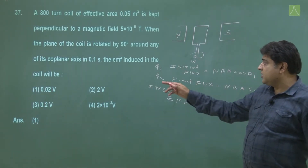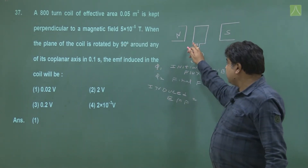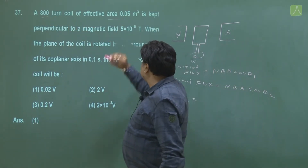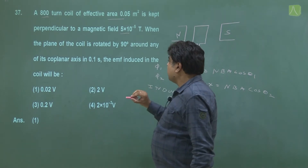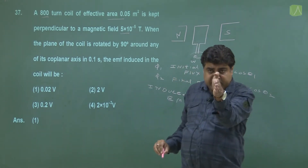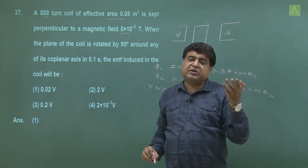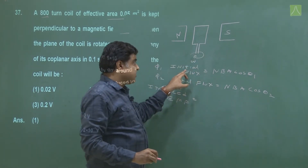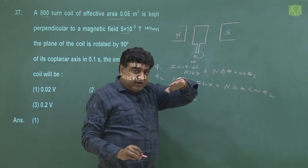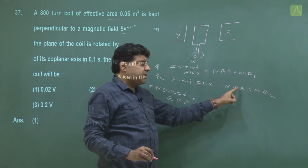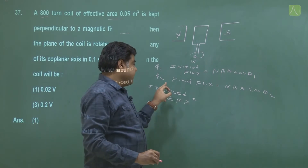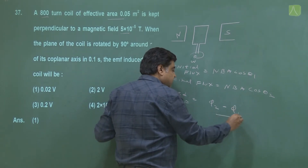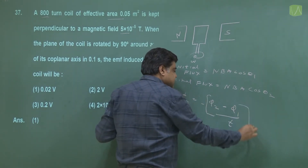Next question: we have a rectangular coil placed near a magnet with 800 turns, given area and magnetic field. The coil is turned 90 degrees. The induced EMF equals change in flux divided by time. Initial flux is NBAcos(θ₁) and final flux is NBAcos(θ₂). The induced EMF is −(φ₂ − φ₁) / t by Lenz's law.